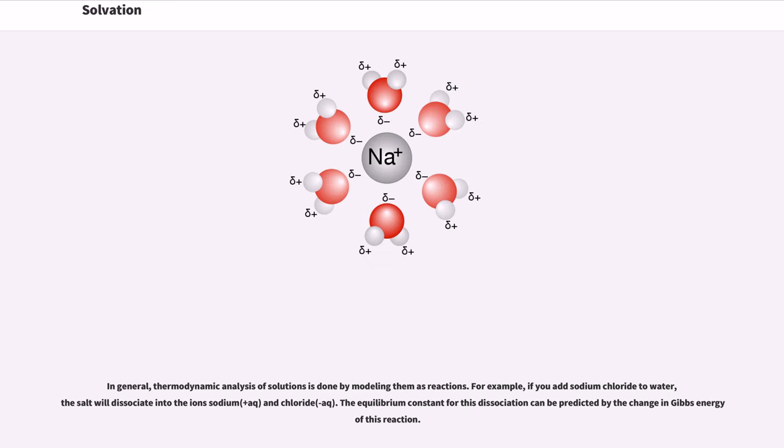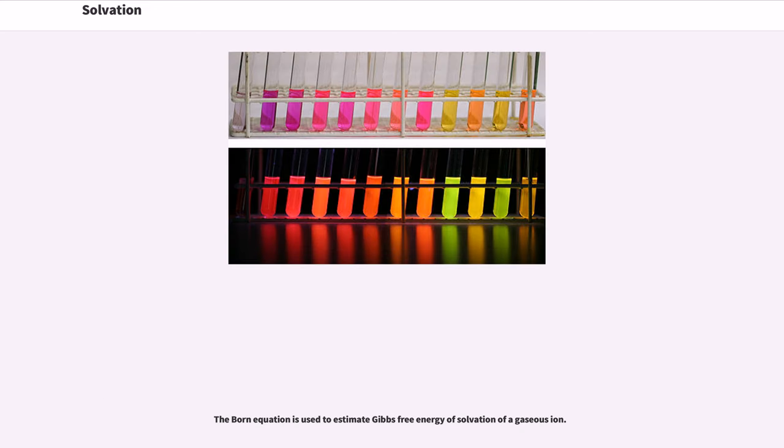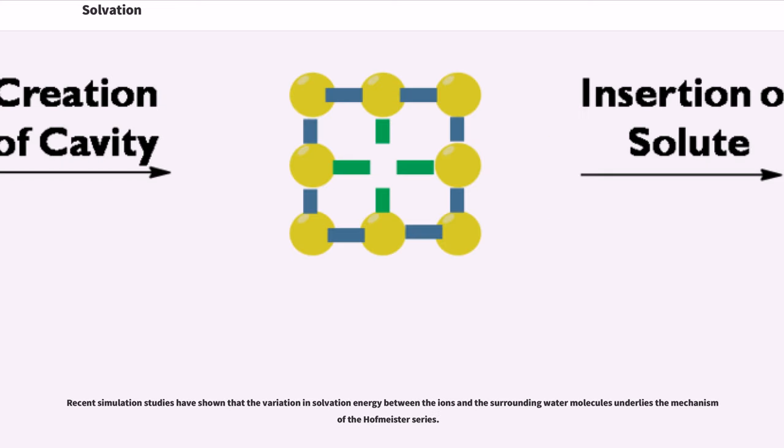In general, thermodynamic analysis of solutions is done by modeling them as reactions. For example, if you add sodium chloride to water, the salt will dissociate into the ions sodium and chloride. The equilibrium constant for this dissociation can be predicted by the change in Gibbs energy of this reaction. The Born equation is used to estimate Gibbs free energy of solvation of a gaseous ion. Recent simulation studies have shown that the variation in solvation energy between the ions in the surrounding water molecules underlies the mechanism of the Hofmeister series.